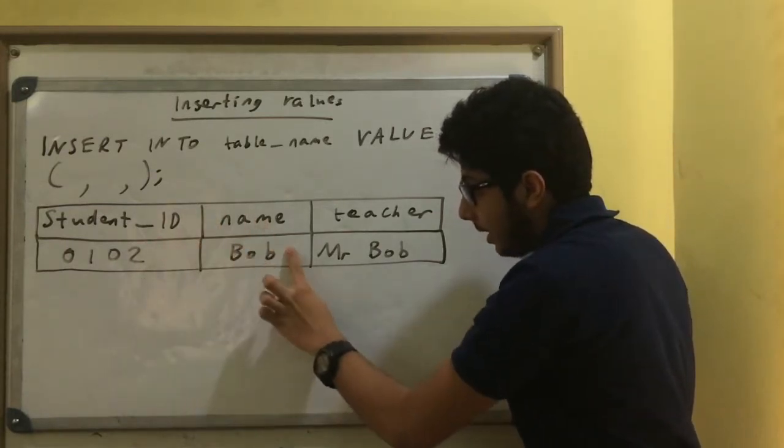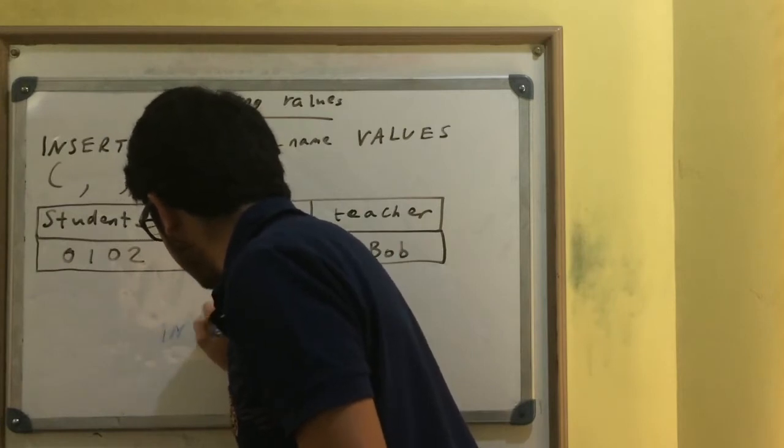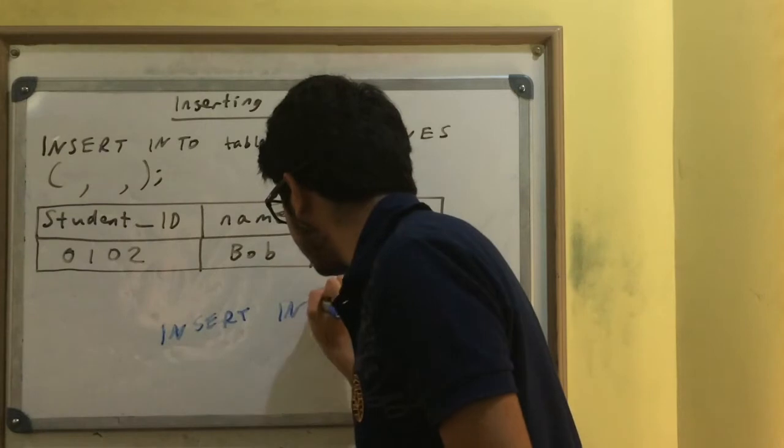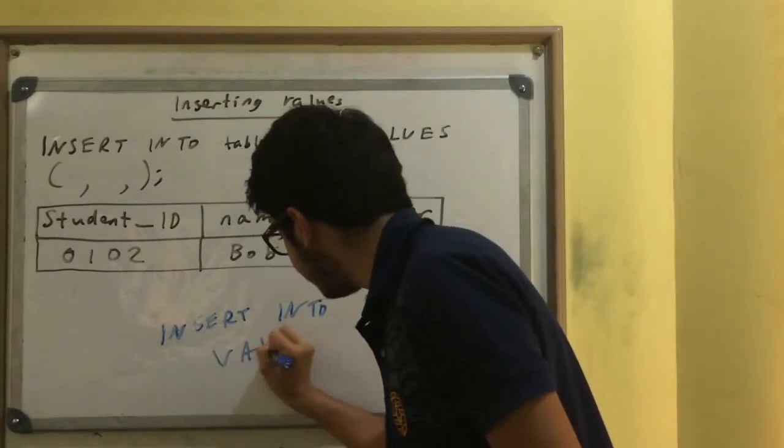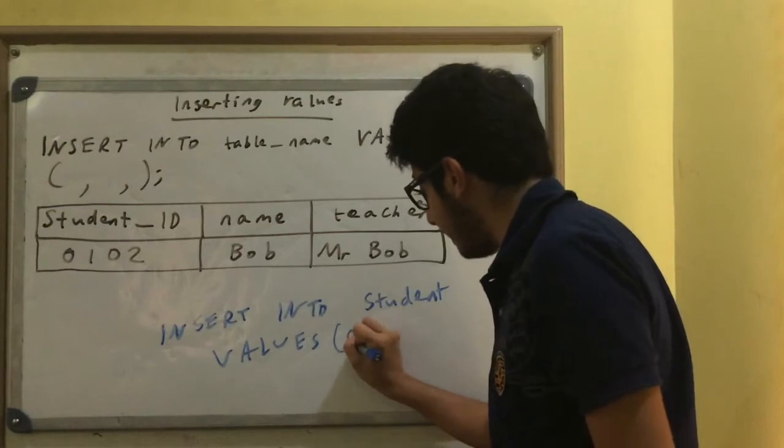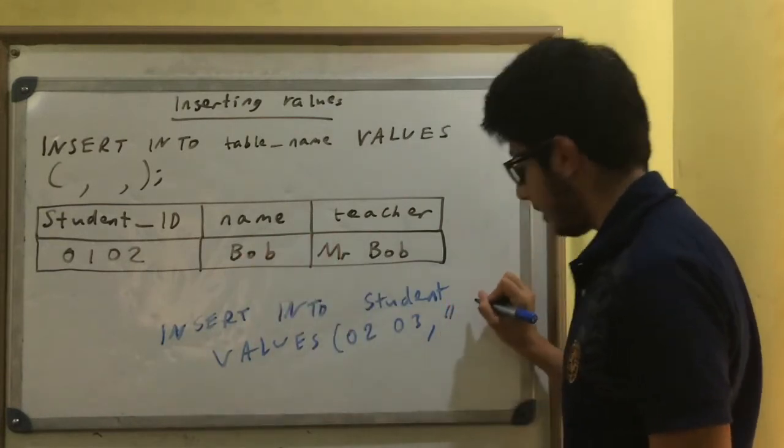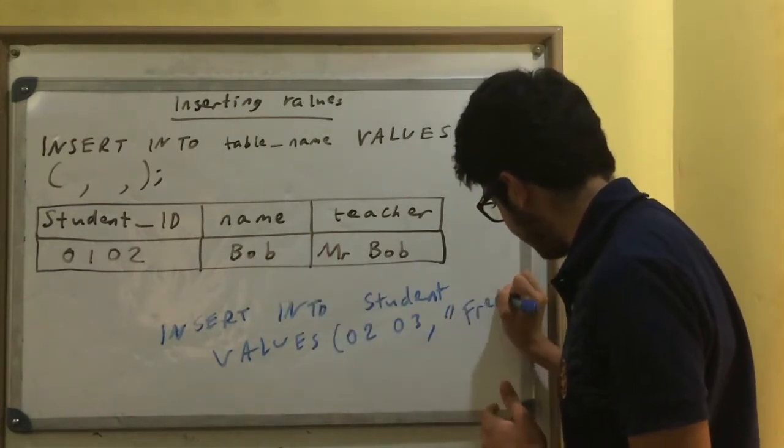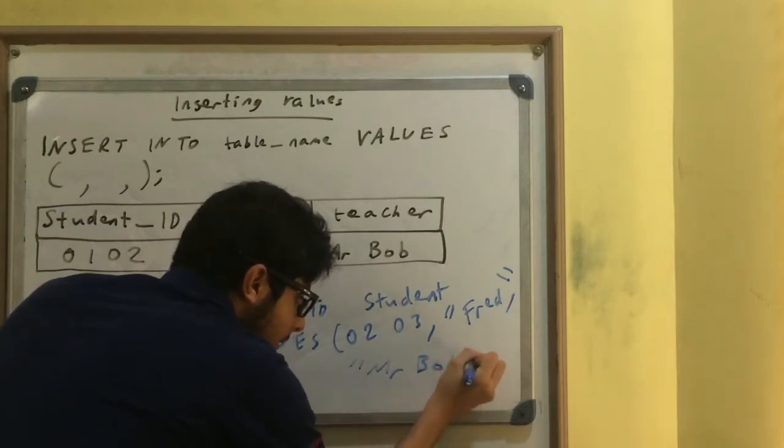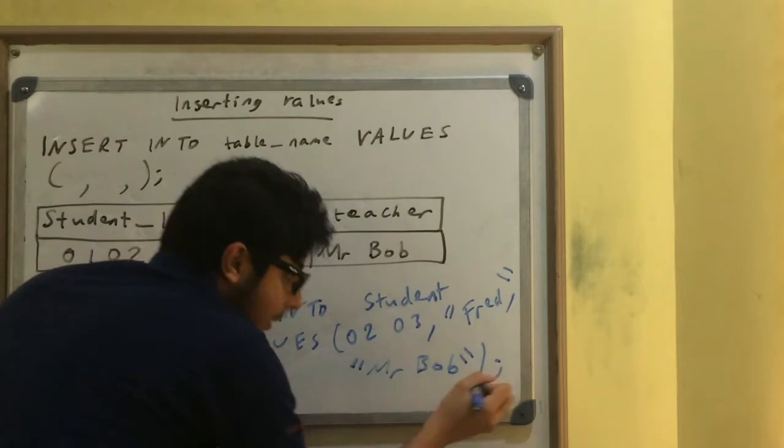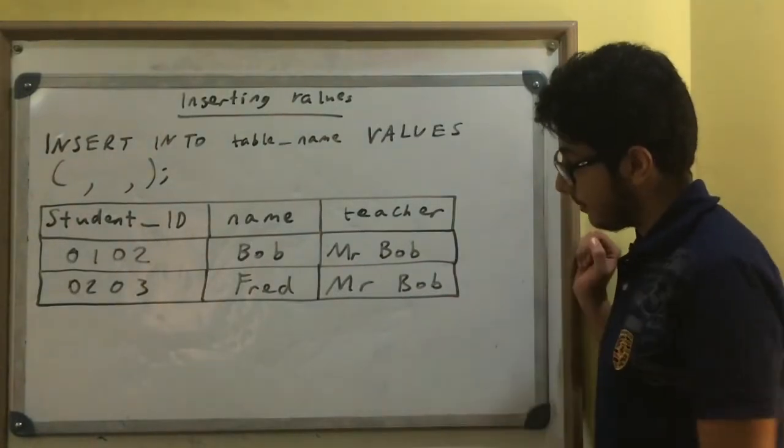Here's the primary key, then the name, and then the teacher name. If I wanted to insert another row: INSERT INTO the table name, which I named student, VALUES. Let's have a new student ID, 0203. And then the student name, Fred. And teacher, let's have the same teacher, Mr. Bob. Close bracket, semicolon. And then what would happen to my table - it would have a new record. And now it would look like this with two records.